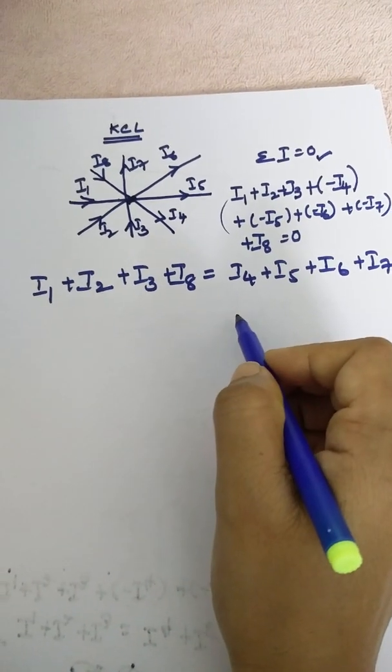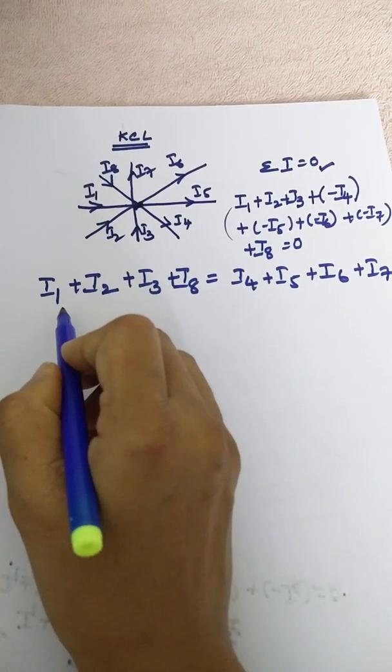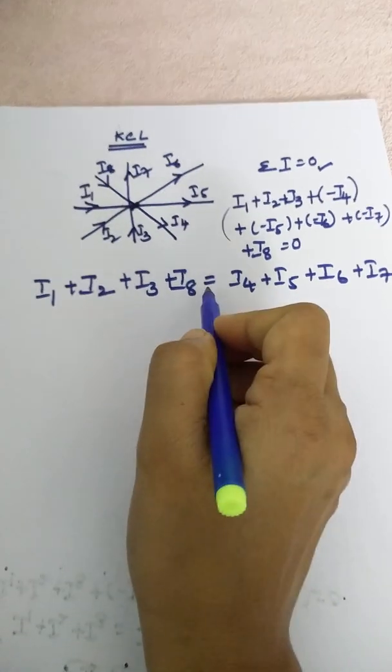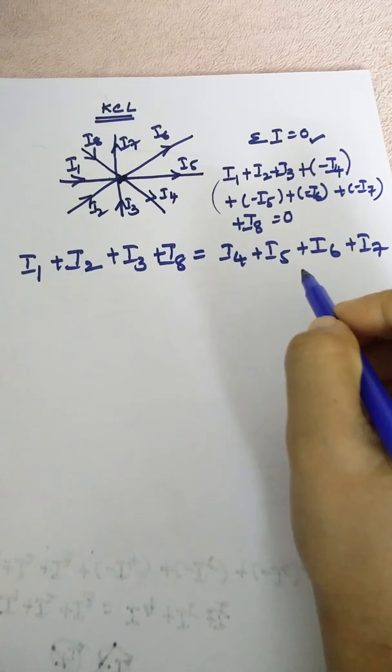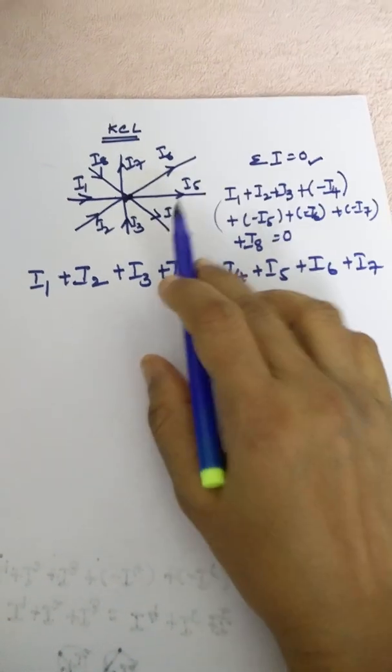So how we can define KCL now? Sum of all the currents entering to a node is equal to sum of all the currents leaving that same node. In this way we can define KCL.